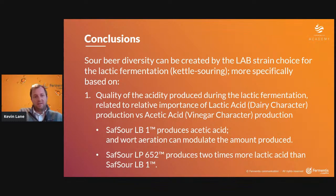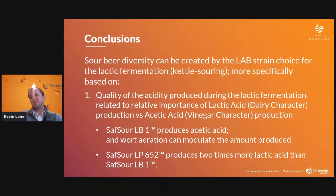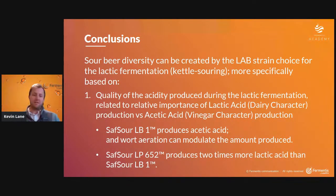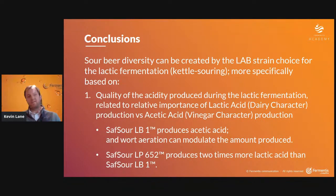SafSour LB1, the brevis, produces acetic acid and wort aeration can modulate that — we can increase acetic acid produced by introducing oxygen into the lactic fermentation. With LP652, the plantarum, it produces pretty much twice as much lactic acid as the brevis. That goes back to the beginning: homofermentative takes one glucose to two lactic acid, whereas brevis heterofermentative decarboxylates — one molecule becomes lactic acid, the other becomes ethanol or acetic acid depending on oxygen concentration.